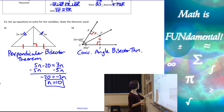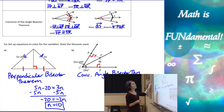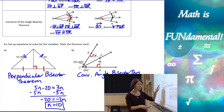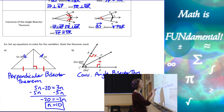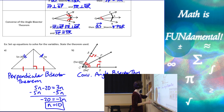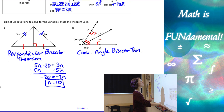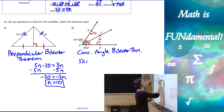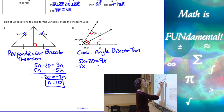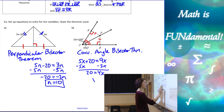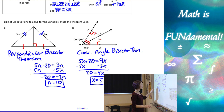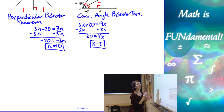Looking at that theorem, the converse states that if we have all this given information — which we do — we can use the theorem to state that the angles must be congruent. So we set the angles equal to each other: 5X plus 20 equals 9X. Collecting the X's gives us 20 equals 4X, so X equals 5.